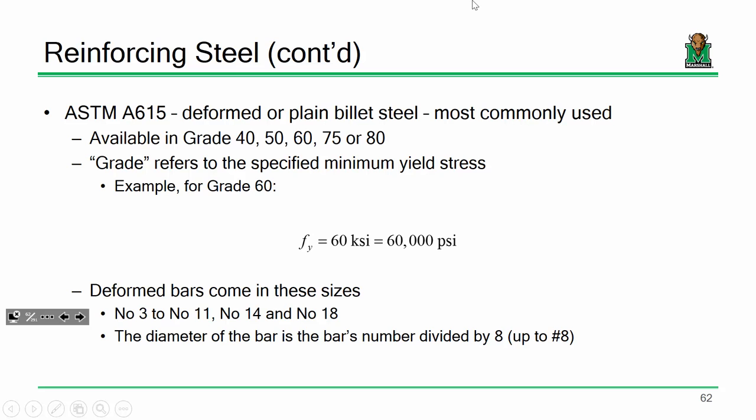E is constant for all steels, but other properties like yield stress and tensile stress vary by grade. For grade 40 rebar, the yield stress is 40 KSI. The most common grade we'll use is grade 60, with a yield stress of 60 KSI. So a concrete compressive strength of 4 KSI and a steel yield stress of 60 KSI are the two material properties we'll use most often throughout this semester.